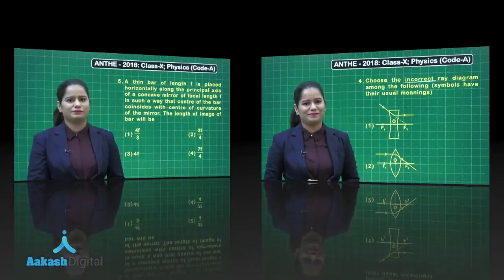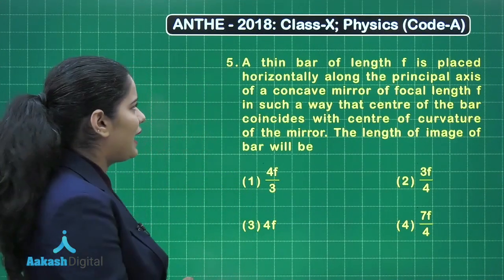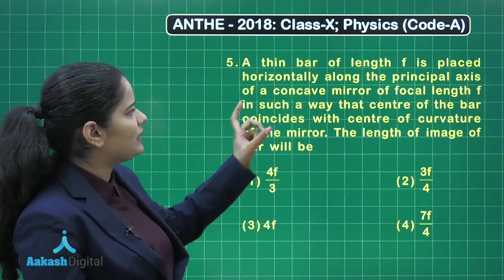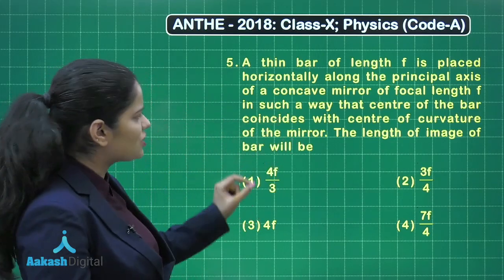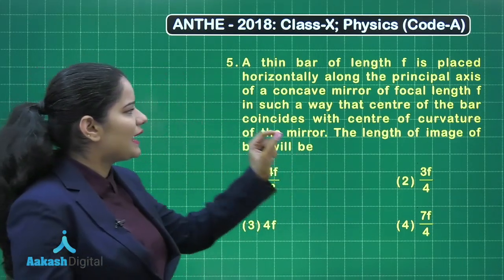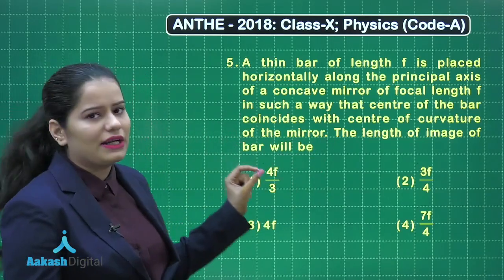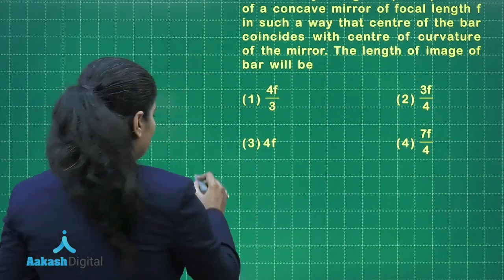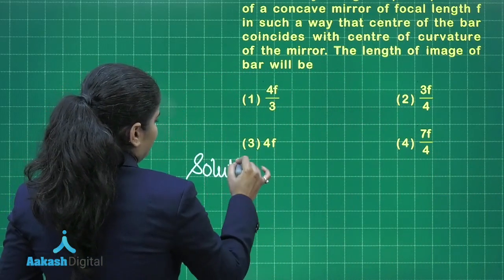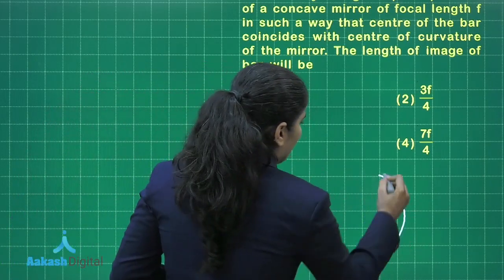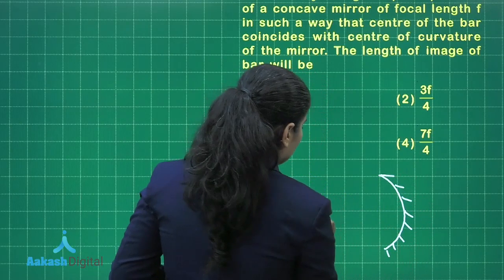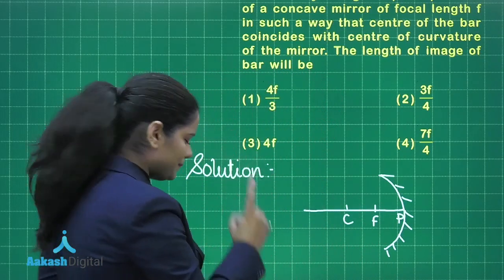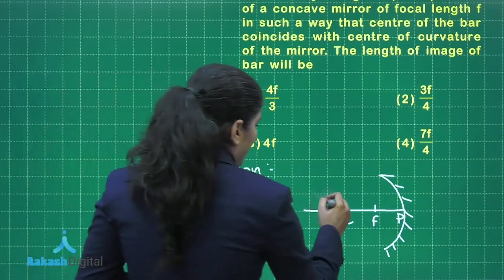Now let's move on to the next question from chapter Light, specifically from mirrors. A thin bar of length F is placed horizontally along the principal axis of a concave mirror of focal length F, such that the center of the bar coincides with the center of curvature of the mirror. We need to find the length of the image of the bar. Let's look at the figure: we have a concave mirror with a pole, focus, and center of curvature. A bar is placed as described.